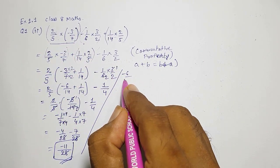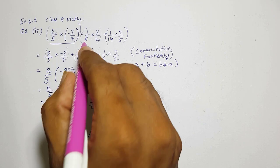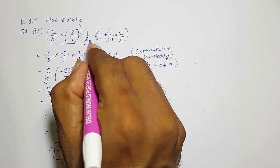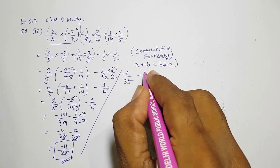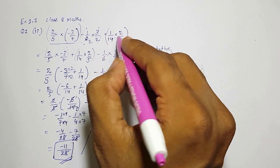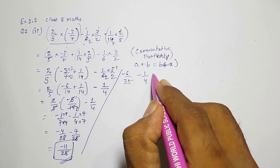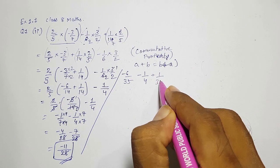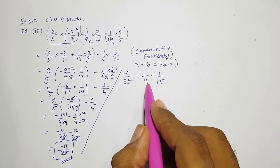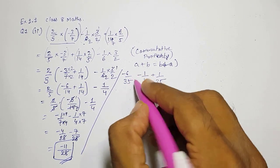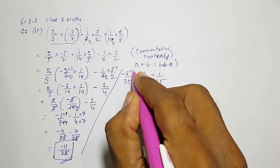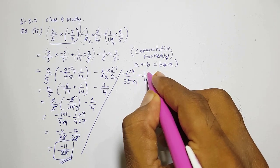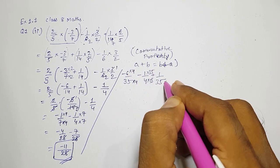So here we cannot cancel, directly minus 2, 3s are 6 and 3, 5, 7, 5s are 35. Here we can cancel, 3 1s are 3, 2s are, so minus 1 by 4. And here 2 1s and 7s, so plus 1 by 35. Now LCM will be 35, 4s are 140.